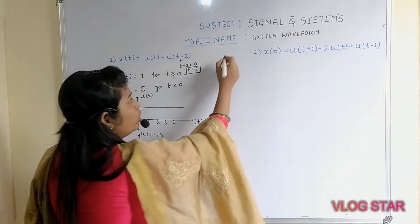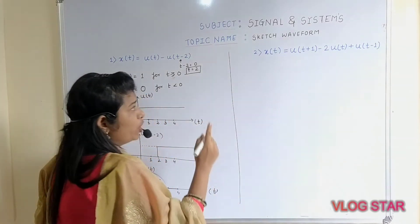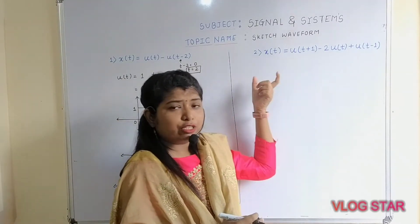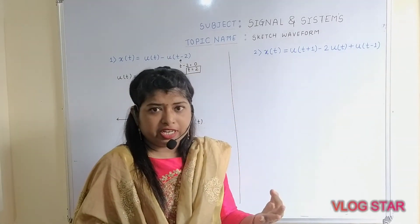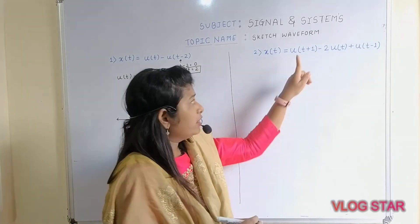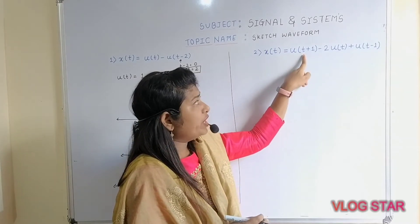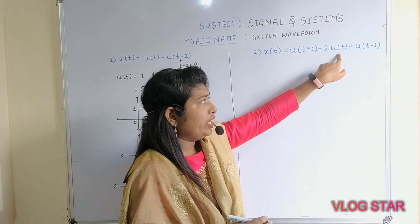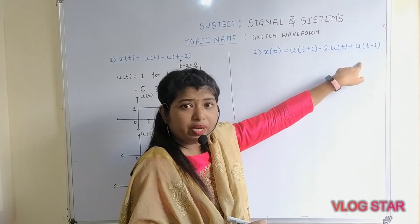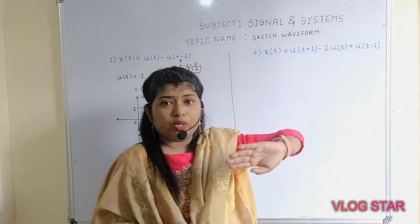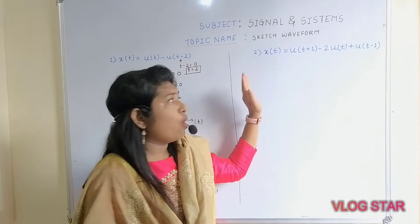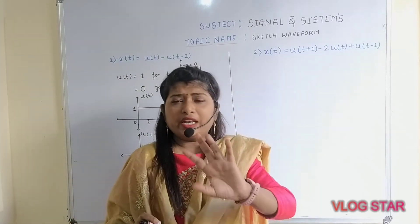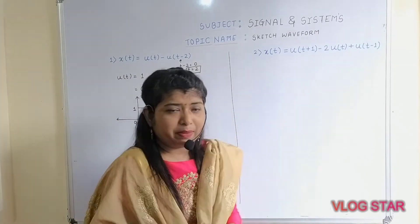Similarly, you need to plot the second signal. How many signals are there? x(t) consists of three different signals. The first one is u(t + 1), the second is 2·u(t), and the third is u(t − 1). All three signals are related to the unit step signal.